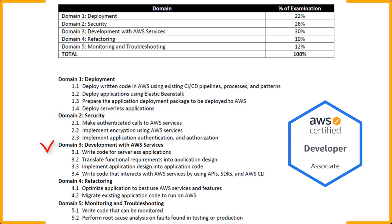Domain three is Development with AWS Services. You'll write shell scripts for serverless applications, work with CloudFormation templates, translate functional requirements into application design, implement application design into application code, and write code that interacts with AWS services using APIs, SDKs, and the AWS CLI.